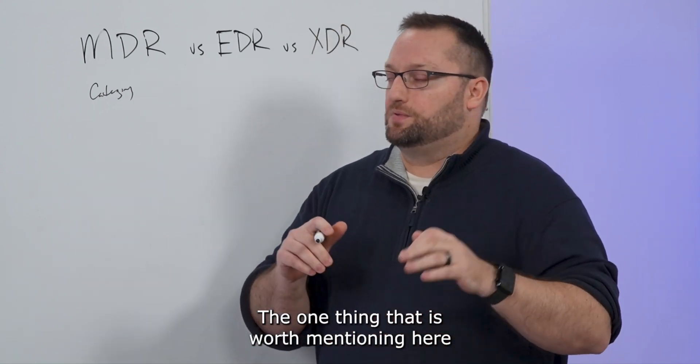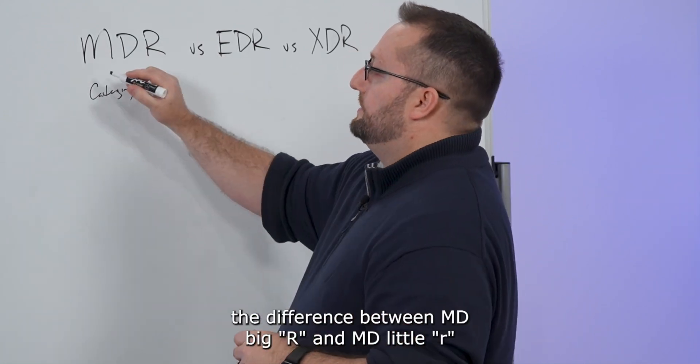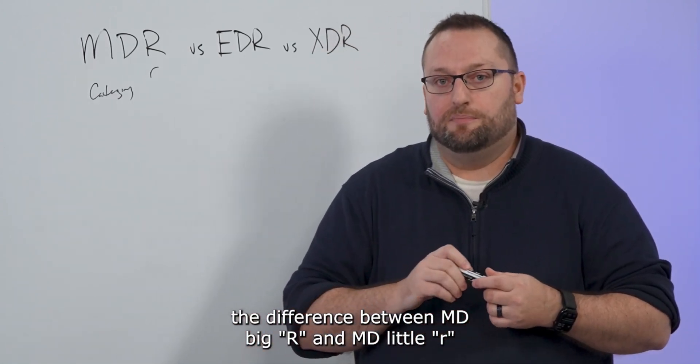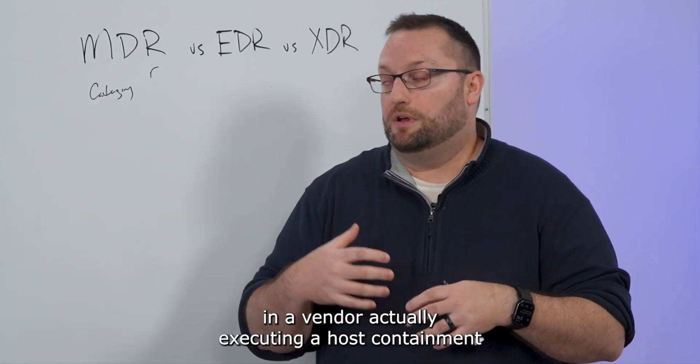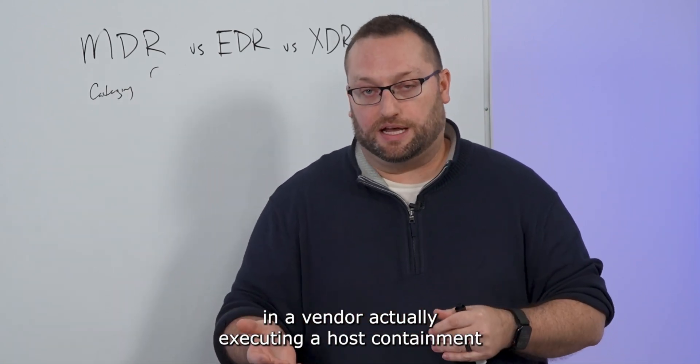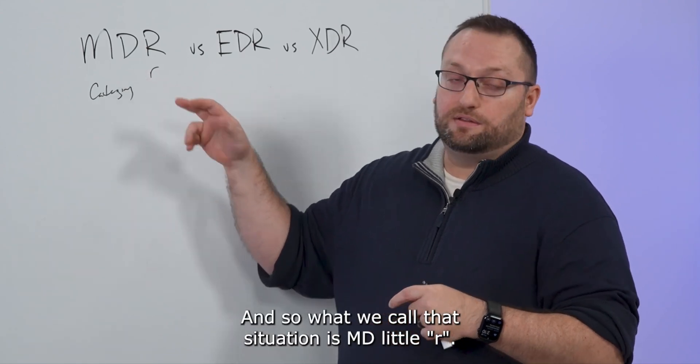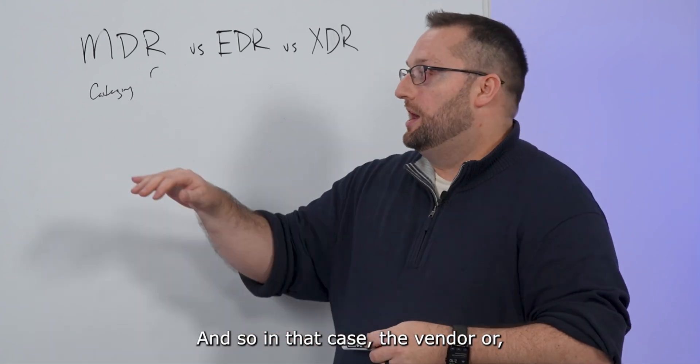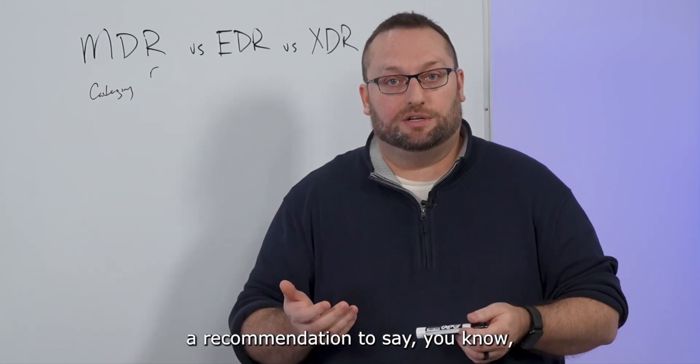And then if there is a threat, they will actually conduct those response actions. They might include something like containing a host, maybe deleting a binary, deleting a registry key, something like that. The one thing that is worth mentioning here is we kind of joke around the office a little bit, the difference between MD big R and MD little r, because not all customers are interested in a vendor actually executing a host containment on behalf of the customer.